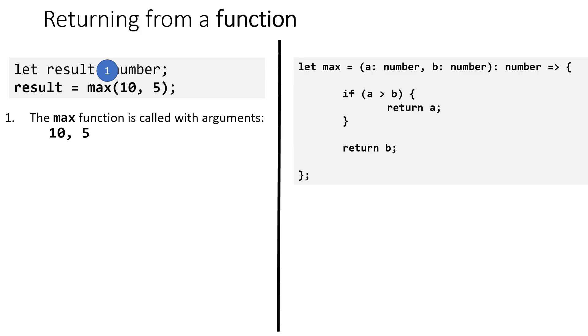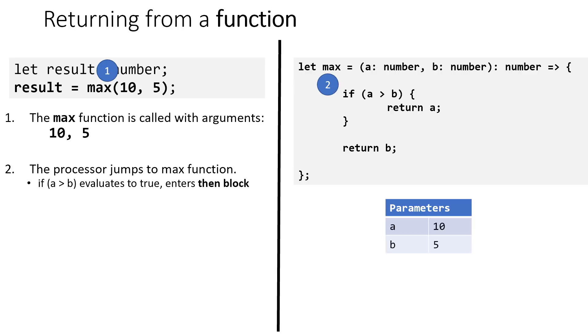So let's try tracing through this. The first thing that happens is we reach a call to max, and let's imagine we're calling max with the arguments 10 and 5. 10 and 5 are assigned to the parameters a and b, so parameter a has a value of 10, and parameter b has a value of 5. The processor jumps to the max function after these parameters are assigned to their values, and we start with the first line of the function body, where we reach an if statement: if a is greater than b. Well, a is indeed greater than b, 10 is greater than 5, so we're going to go into the then block.